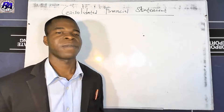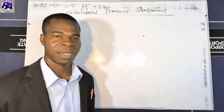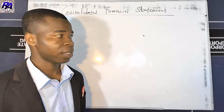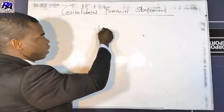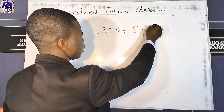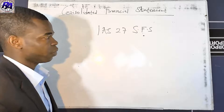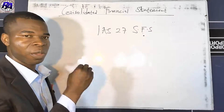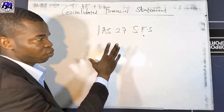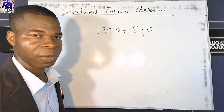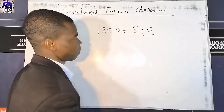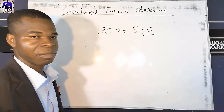We have six accounting standards governing the preparation and presentation of consolidated financial statements. The first is IAS 27, which deals with separate financial statements — specifically the presentation of separate financial statements by a parent.